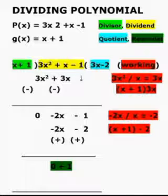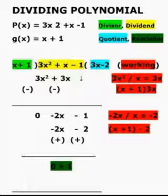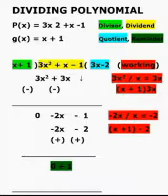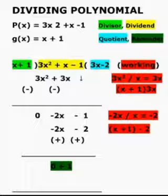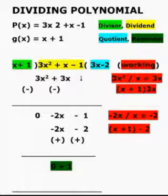The division process is complete if we get the remainder 0, or if the degree of the remainder is less than the degree of the divisor. The degree of the remainder here — for constant 1, the degree is 0. And the degree of the divisor is 1. So the process stops here.